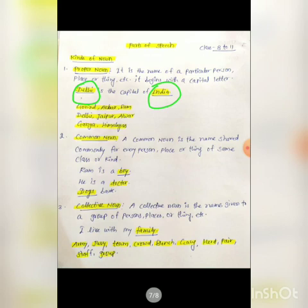Country is a common noun, whereas India is a proper noun. So proper noun is the name of a particular person, place, or thing, etc. Let's have some other examples of proper noun.